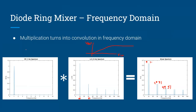If you take a sinusoid and amplify it to oblivion, it turns into something like a square wave — from a circuit perspective, you're essentially clipping the top and bottom. That's kind of what's happening inside the ring mixer. If you assume the LO voltage is high enough, it looks like a square wave even if it is sinusoidal.